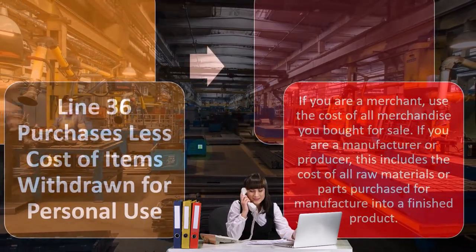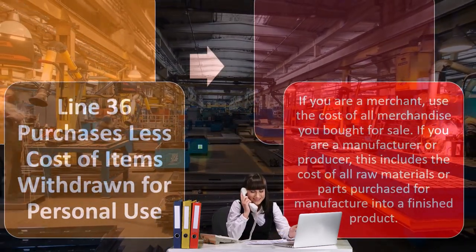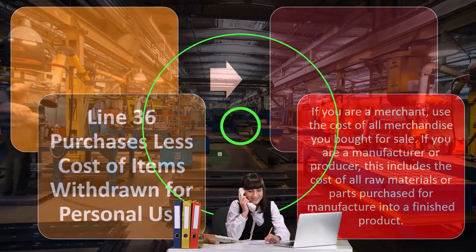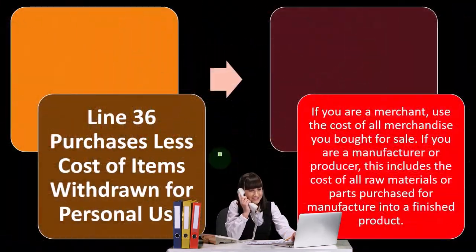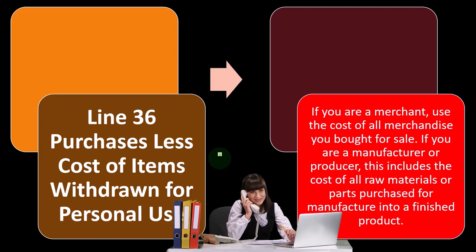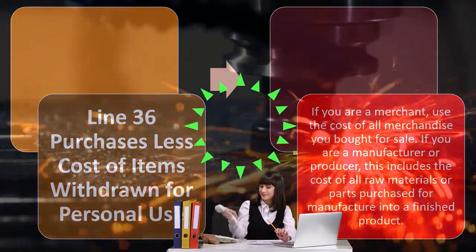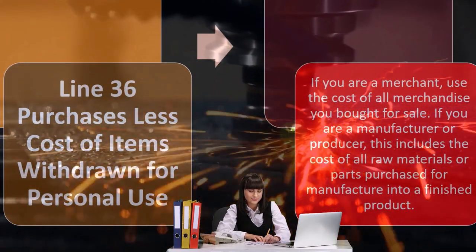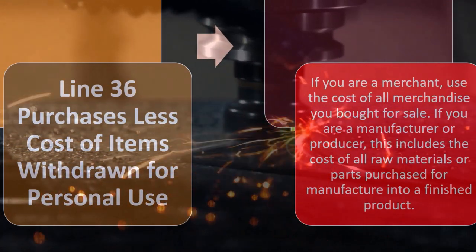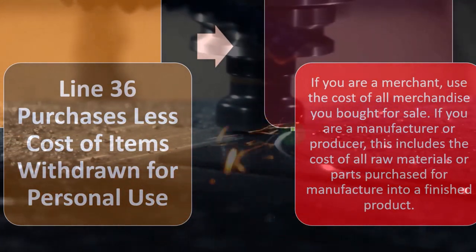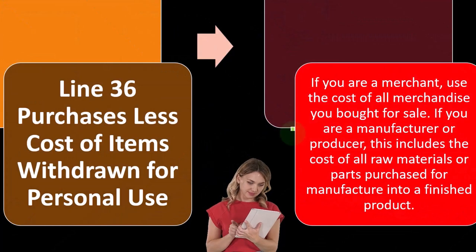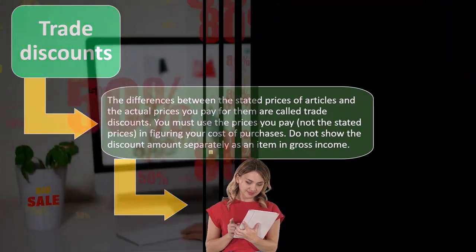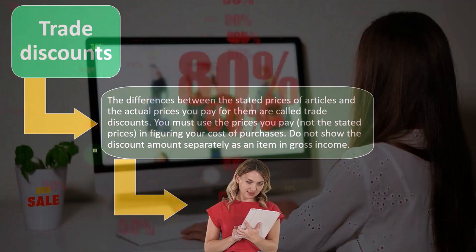If you are a merchant — just buying, marking up, and selling inventory — use the cost of all merchandise you bought for sale. If you are a manufacturer, meaning you're converting inventory from raw materials to finished goods, or a producer, this includes the cost of all raw materials or parts purchased for manufacture into a finished product.